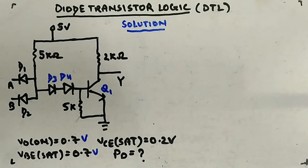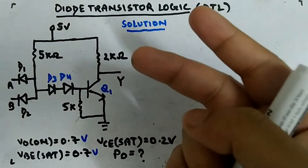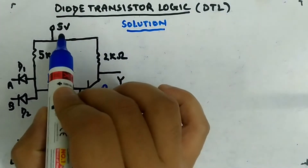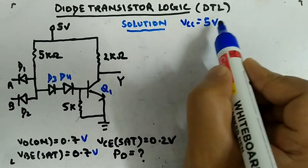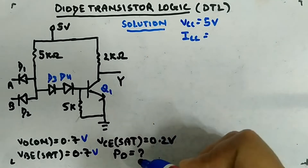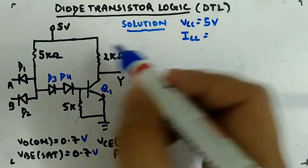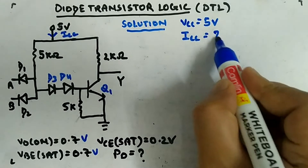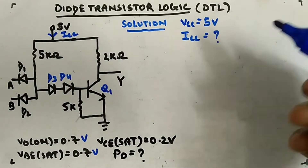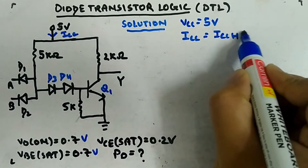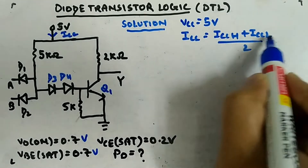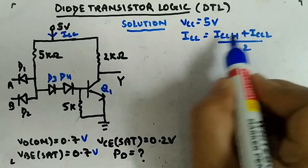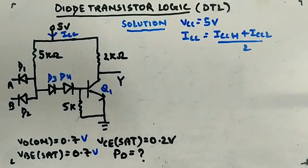Whenever you have to calculate power dissipation, you need to think of two terms: supply voltage and supply current — how much supply voltage it is connected to and how much supply current it is drawing overall. VCC is 5 volt. The average ICC is ICC_H plus ICC_L divided by 2, where ICC_H is the supply current when the output is high and ICC_L when the output is low. Multiplying ICC average by VCC gives you power dissipation.